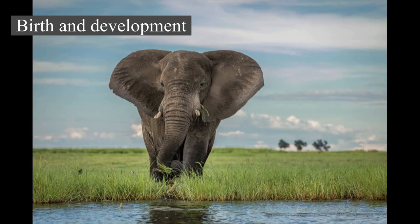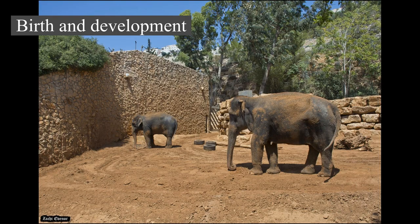Play behavior in calves differs between the sexes — females run or chase each other while males play-fight. Females are sexually mature by the age of nine years while males become mature around 14–15 years. Adulthood starts at about 18 years of age in both sexes. Elephants have long lifespans, reaching 60–70 years of age. Lin Wang, a captive male Asian elephant, lived for 86 years.